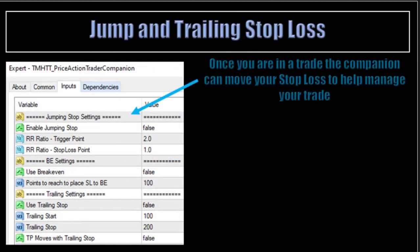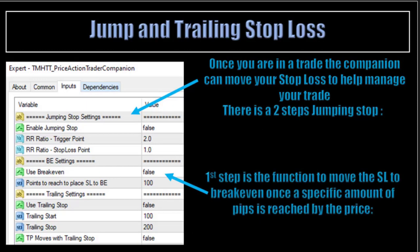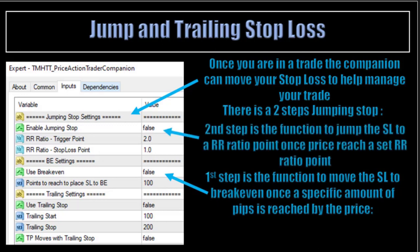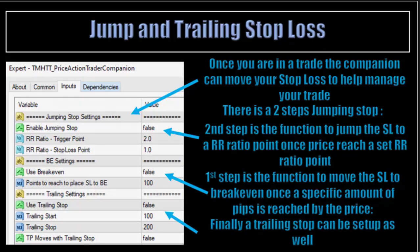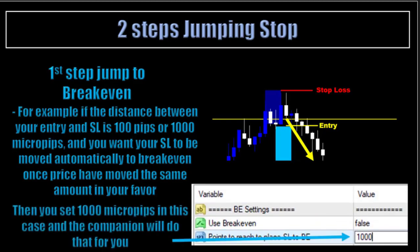Jump and Trailing Stop — Jumping Stop Settings. Once you are in a trade, the companion can move your stop-loss to help manage your trade. There is a 2-step jumping stop available. The first step is to move the stop-loss to break even once a specific amount of pips is reached by the price. The second step is to jump the stop-loss to a specific risk-to-reward ratio point once the price reaches another risk-reward ratio point. For example, if the distance between your entry and stop-loss is 100 pips or 1,000 micropips, and you want your stop-loss moved automatically to break even once price has moved the same amount in your favor, you set 1,000 micropips and the companion will do that for you.